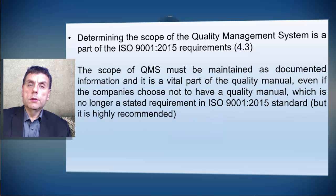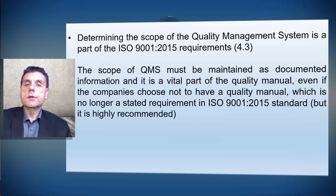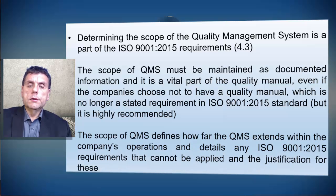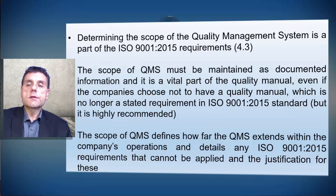The scope of the Quality Management System must be maintained as documented information and it's a vital part of the Quality Manual, even if companies choose not to have a Quality Manual, which is no longer a stated requirement in ISO 9001:2015 standard, but it is highly recommended as we discussed in one of our previous videos. The scope defines how far the Quality Management System extends within the company's operations and details any ISO 9001:2015 requirements that cannot be applied and the justification for these.